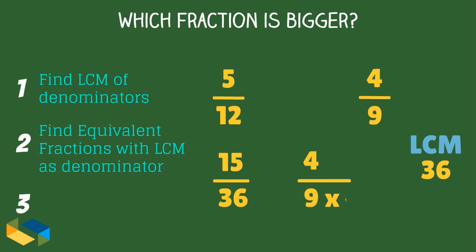The equivalent fraction is 15 upon 36. On the other hand, 9 times 4 is 36. So, we multiply the numerator as well by 4 to get the equivalent fraction 16 upon 36.